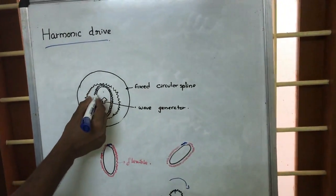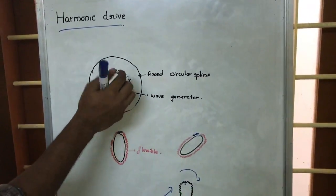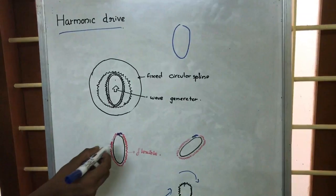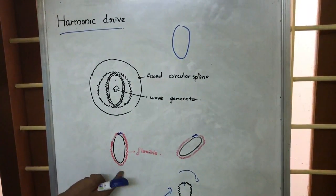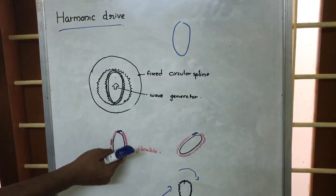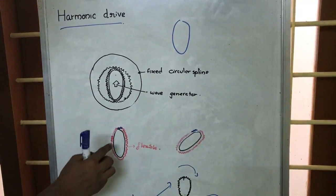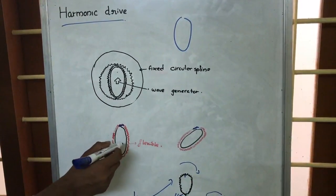...which we are placing a flexible spline. That means this gear is flexible. Flexible means here at a particular time if this ellipse were like this, then we are locating teeth here...